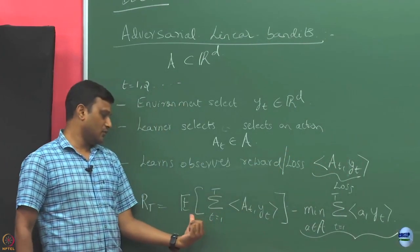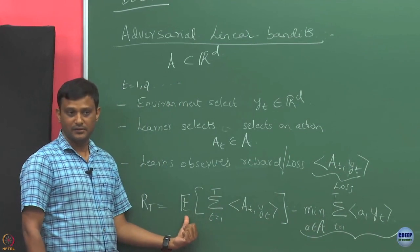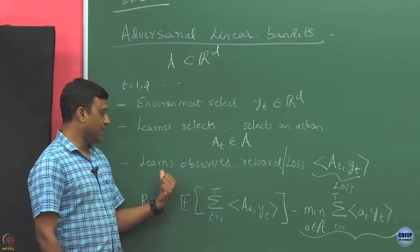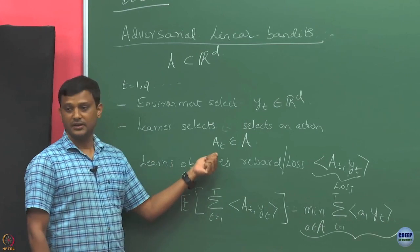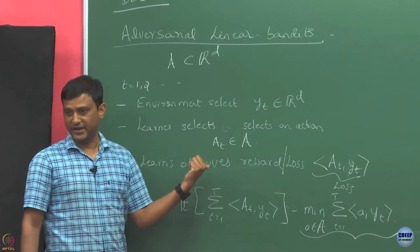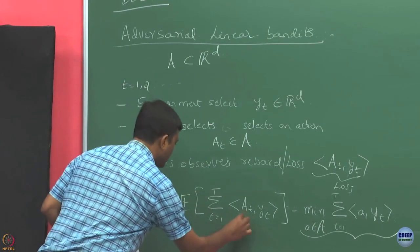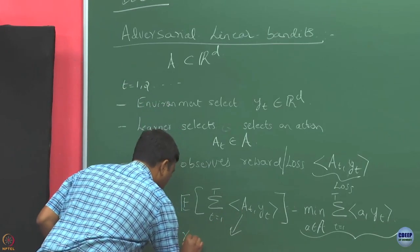So then why is there an expectation? The learner could select A_t in a random fashion — the action could be randomly selected, hence the expectation.